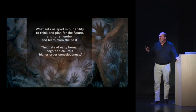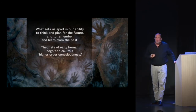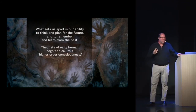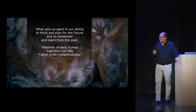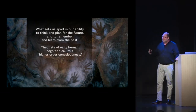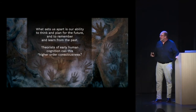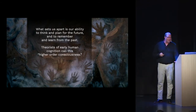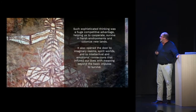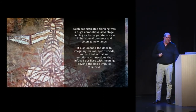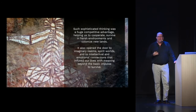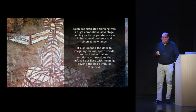What sets us apart is our ability to think, to plan for the future, and to learn from the past — to learn from our mistakes. Animals also have this ability to learn from past mistakes and guide their decisions. Theories of early human cognition call this higher order consciousness. Such sophisticated thinking was a competitive advantage, helping them cooperate, survive in harsh environments, and colonize new lands they had no knowledge about.